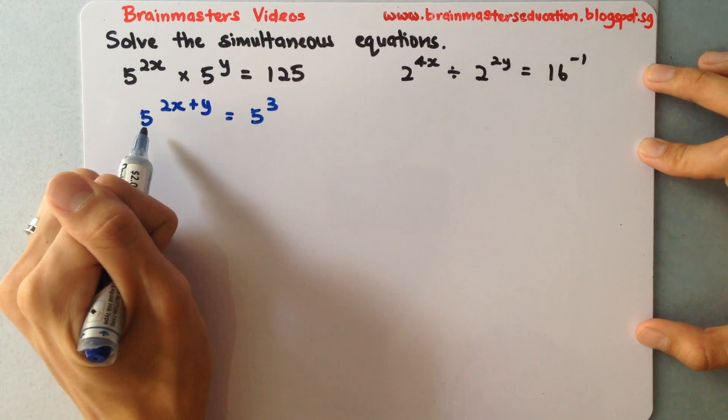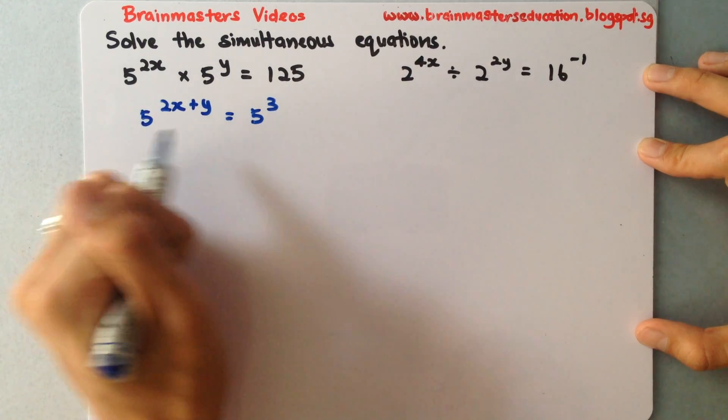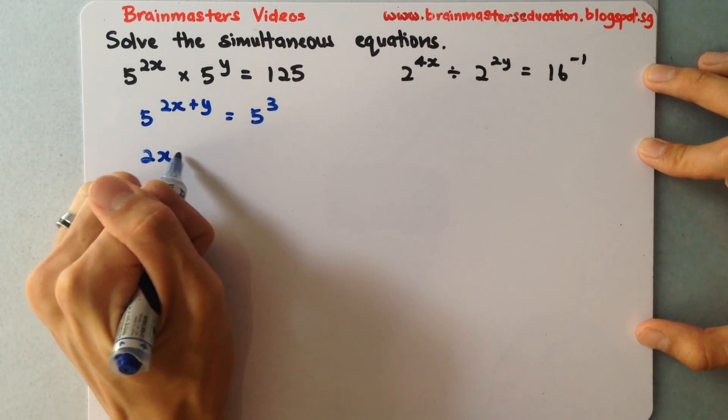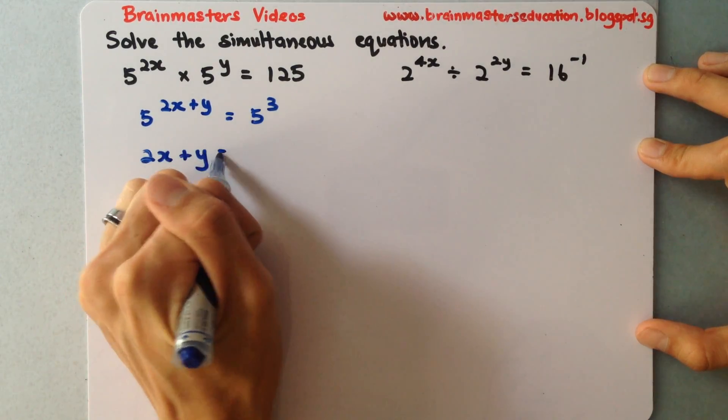So over here, both sides are the same in terms of power of 5. So actually the top, they are actually equal, can be equated. So 2x plus y equals 3.